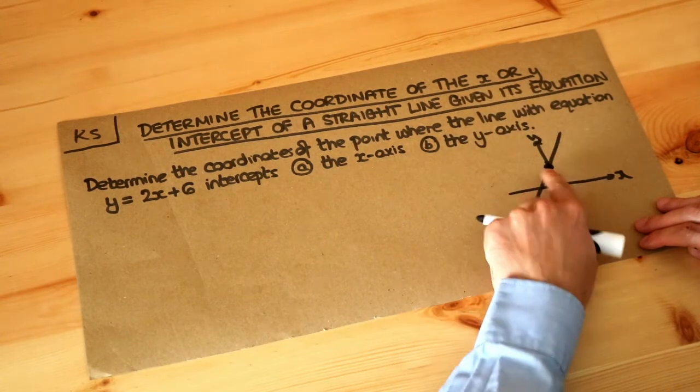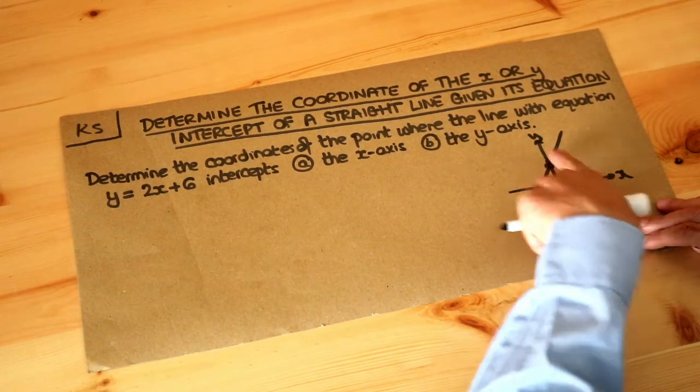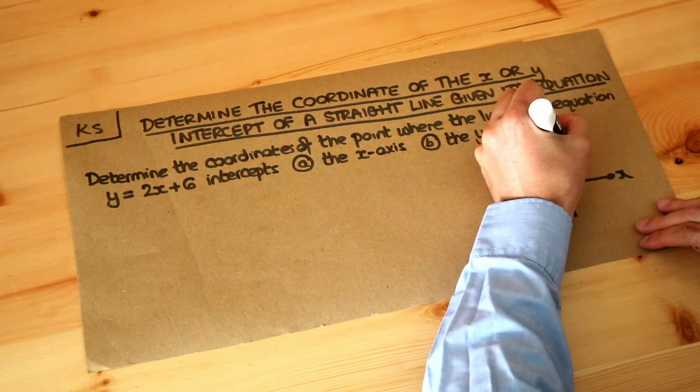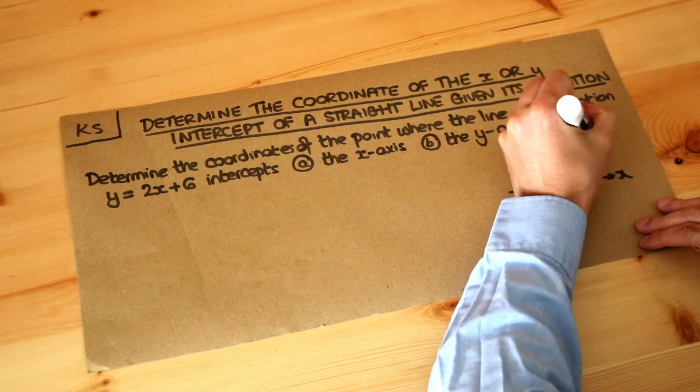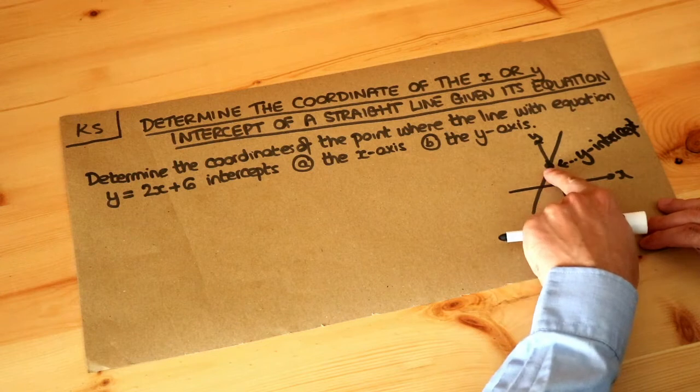Now this point here is where my line cuts the y axis. You can see this is known as the y intercept and let's think about the coordinate here.